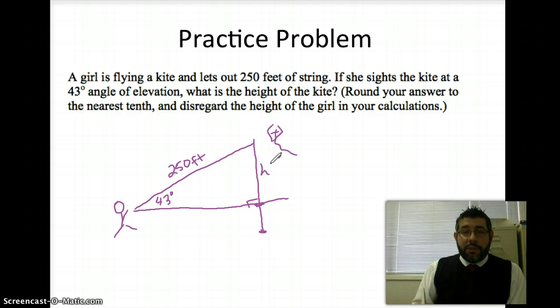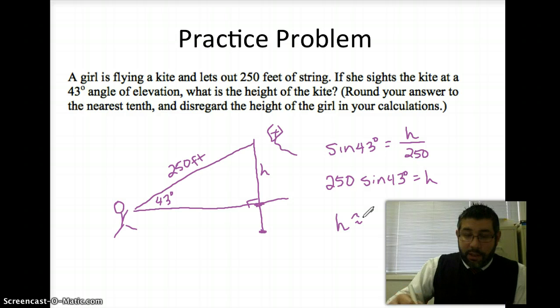So, now we're doing the opposite over the hypotenuse. Opposite over hypotenuse is the sine. Sine of 43 degrees equals the opposite over the hypotenuse. Multiply both sides by 250. And then, again, we'll just enter this in our calculator. And our calculator gets the height of the kite to be approximately 170.5 feet. And there you go. That's all there is to it.